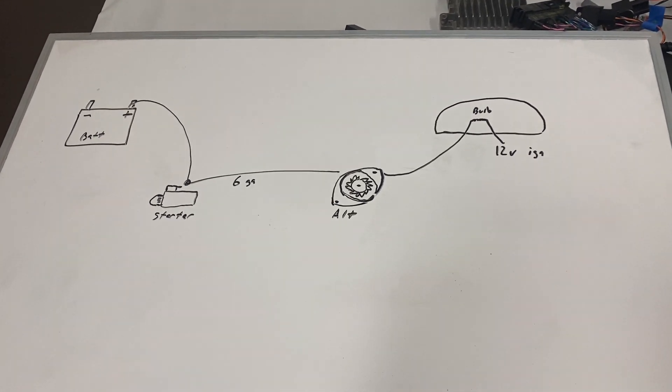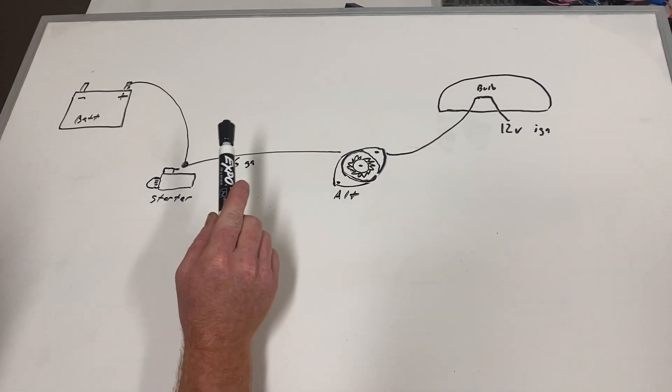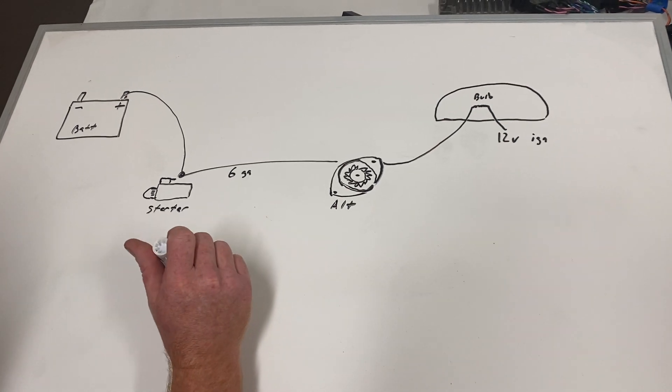A lot of our harnesses are supplied with a cable that's going to go from your alternator to your starter. In most cases it's about six gauge. This is what we recommend for a size.